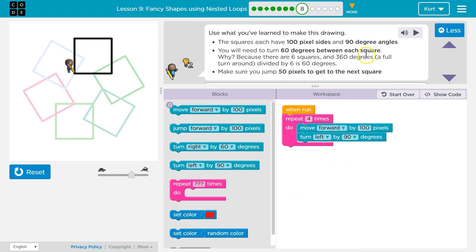You will need to turn 60 degrees each square. Why? Because there are six squares and 360 degrees, a full turnaround. Divide by six is sixty. Oh yeah, 360. Yep. Okay, so we need to turn 60 degrees each square.